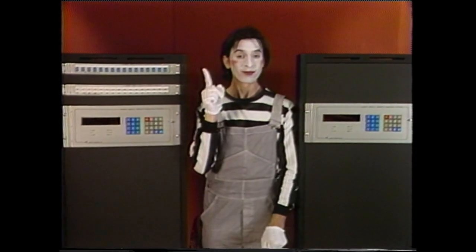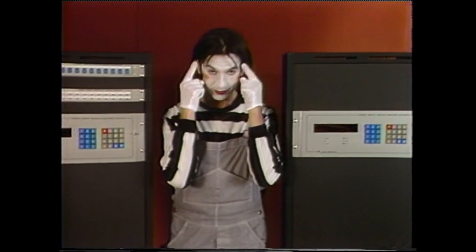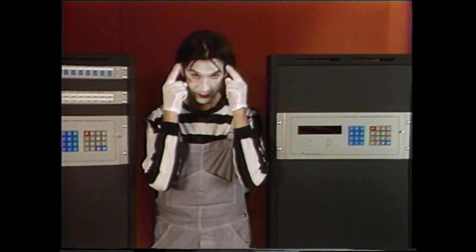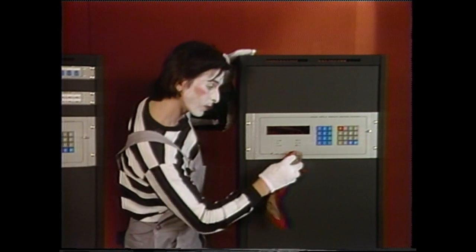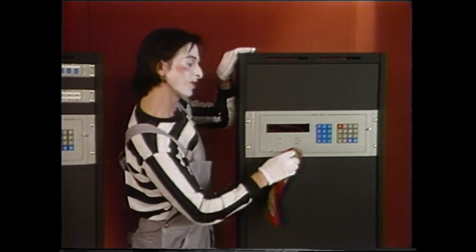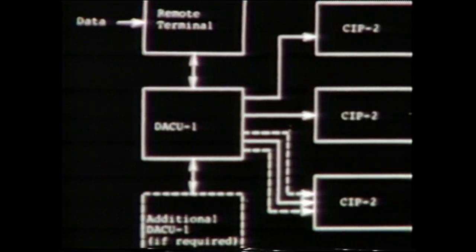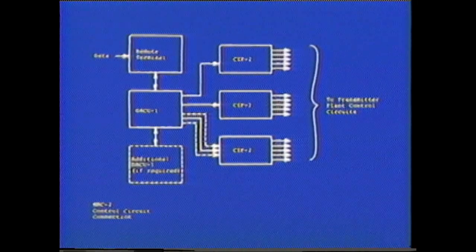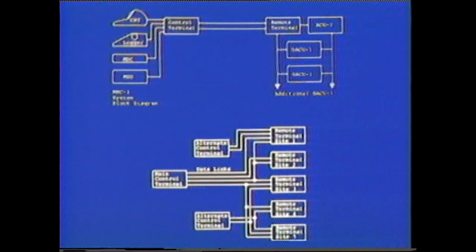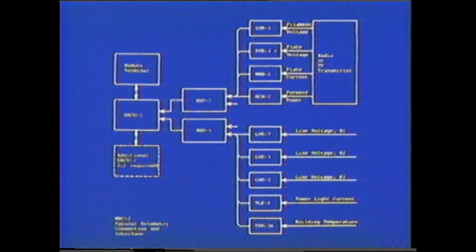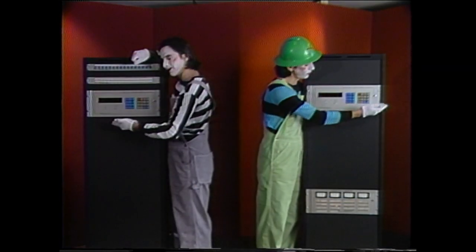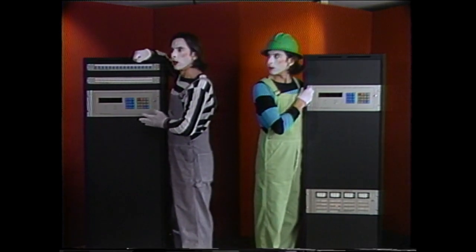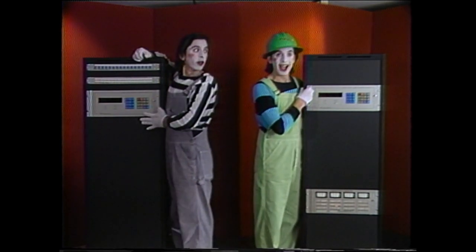First, the MRC-2 uses distributed intelligence. Each component of the system specializes in a particular function to optimize system efficiency. The modular design of the MRC-2 allows orderly expansion and changes without obsoleting existing units. Also, there is a commonality between chassis, which simplifies service and operation.